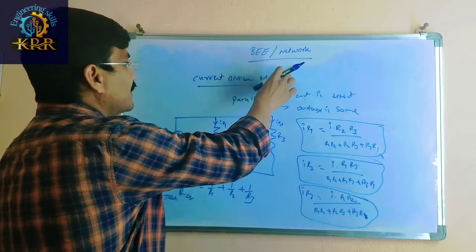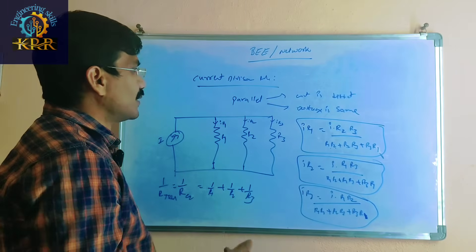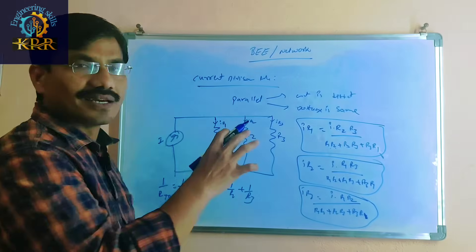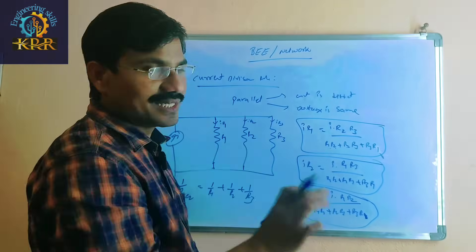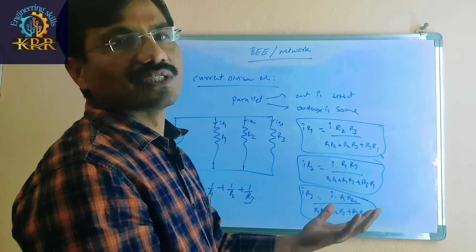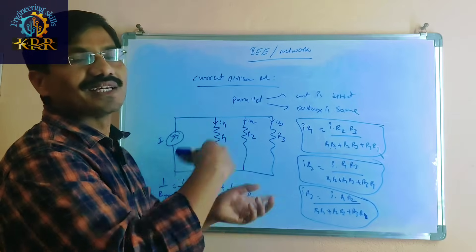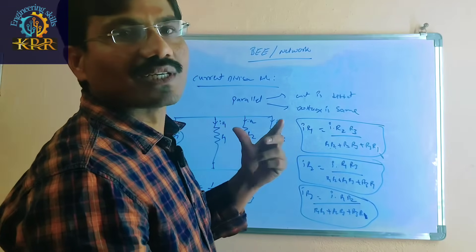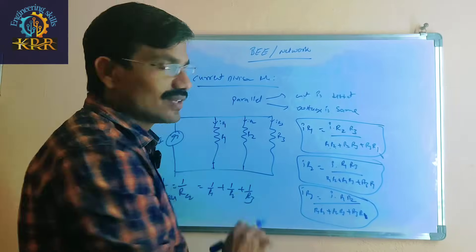In current division rule, all resistors are in parallel. For inductors, the rules are the same as resistors in both parallel and series. However, capacitors are quite the opposite — if it is in series for resistors, it is in parallel for capacitors, and vice versa. Resistors and inductors behave the same, but capacitors are quite different.